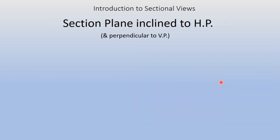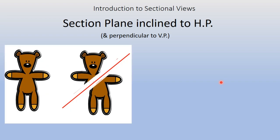Now one more case: the section plane inclined to HP. In the previous two cases we saw the section plane parallel to HP and perpendicular to HP. Now the section plane is inclined to HP, meaning it cuts the solid at some inclination angle with respect to the HP.